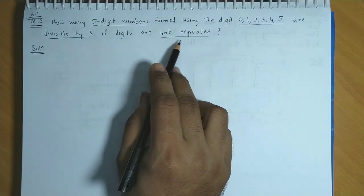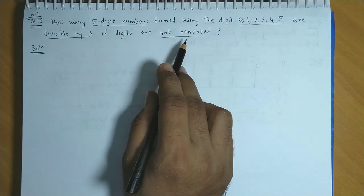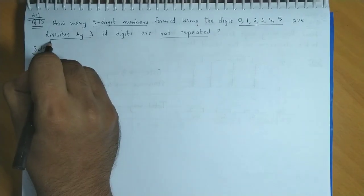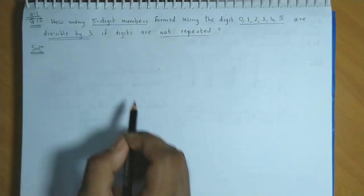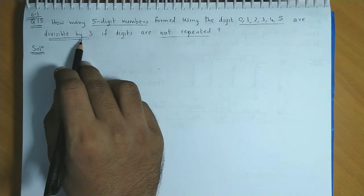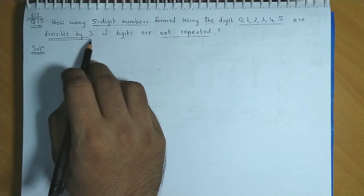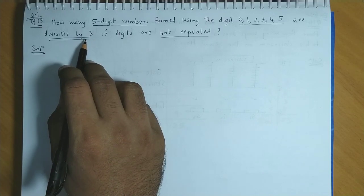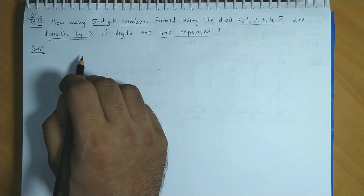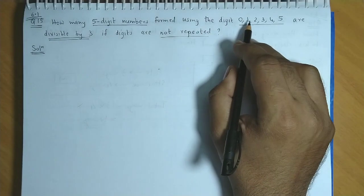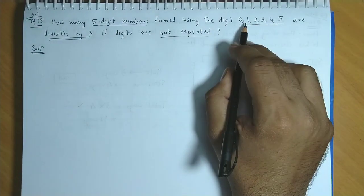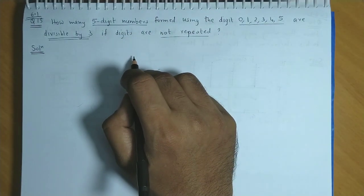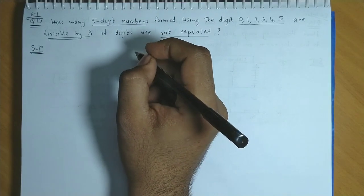And the last condition is no digit should be repeated. The main important condition here is the 5 digit number must be divisible by 3. Now we know that if the sum of digits is a multiple of 3, then the number is divisible by 3. So there are two cases here. We have 0, 1, 2, 3, 4, 5. That means 6 digits. For a 5 digit number, we need only 5 digits. So there are 2 cases.